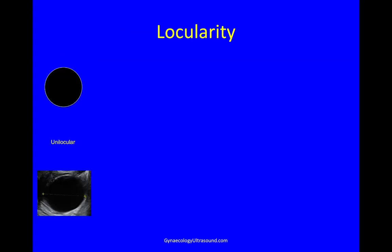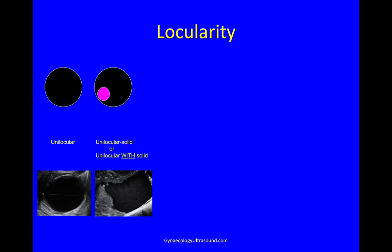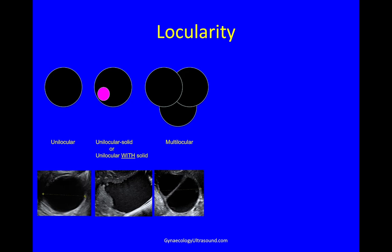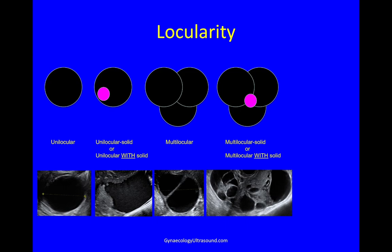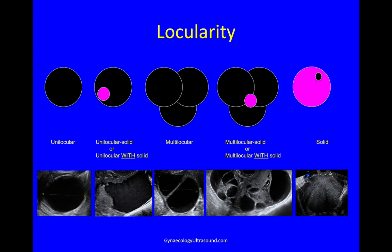Regarding locularity: if something has one locule it's unilocular. If there's also some solid material it's unilocular solid, or unilocular with solid. If there's more than one locule it's multilocular. If there's also a solid component it's multilocular solid or multilocular with solid. And if more than 80% of the mass is solid it's called solid.